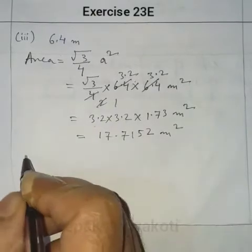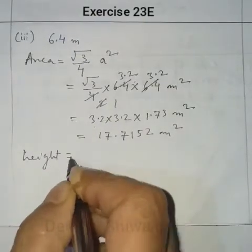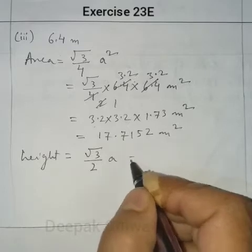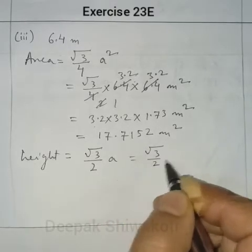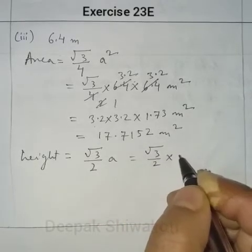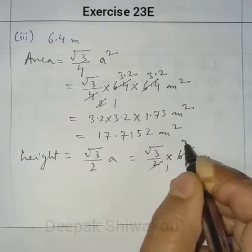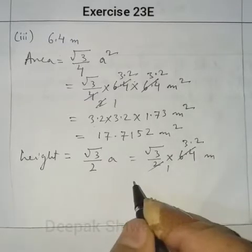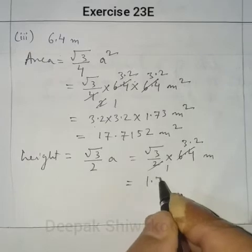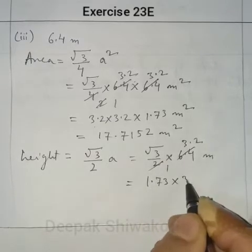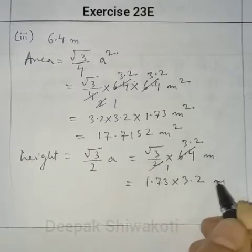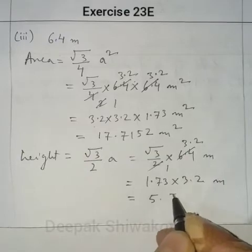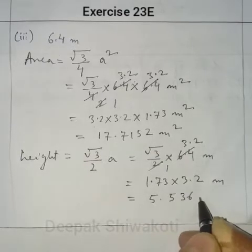Now the height for side 6.4 m: Height = (√3 / 2) × 6.4. Cancel by 2 to get 3.2. Then Height = √3 × 3.2 = 1.73 × 3.2 = 5.536 m.